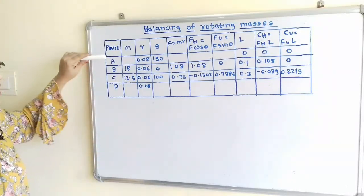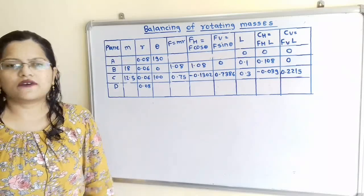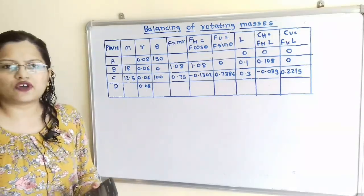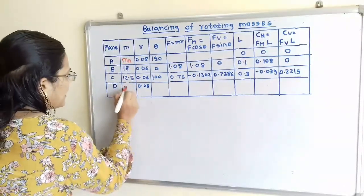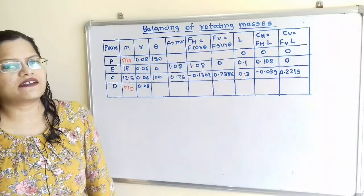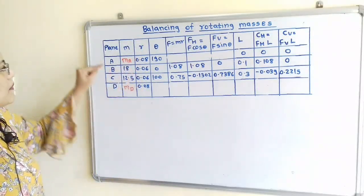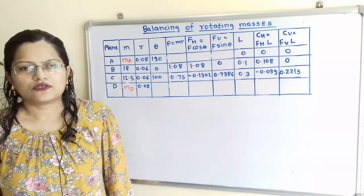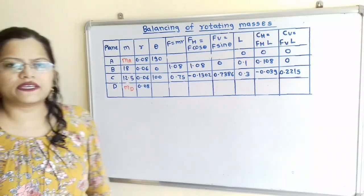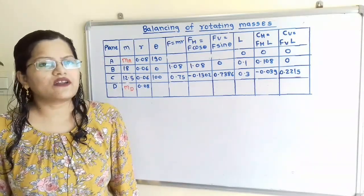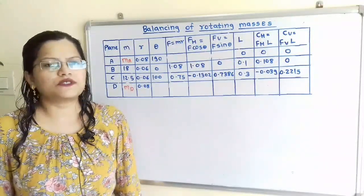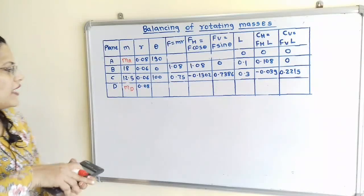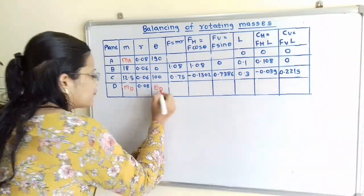The first column is the plane, so there are 4 planes: A, B, C, and D. The next column is mass in kilograms — the masses for B and C are given, but MA and MD are unknown. Then the radius of rotation in meters for all masses, as mentioned in the question. For the angle theta, we consider angle for B equal to 0 degrees. With respect to B, angle A is 190 degrees and angle for C is 100 degrees. Angle theta D is unknown and must be found.